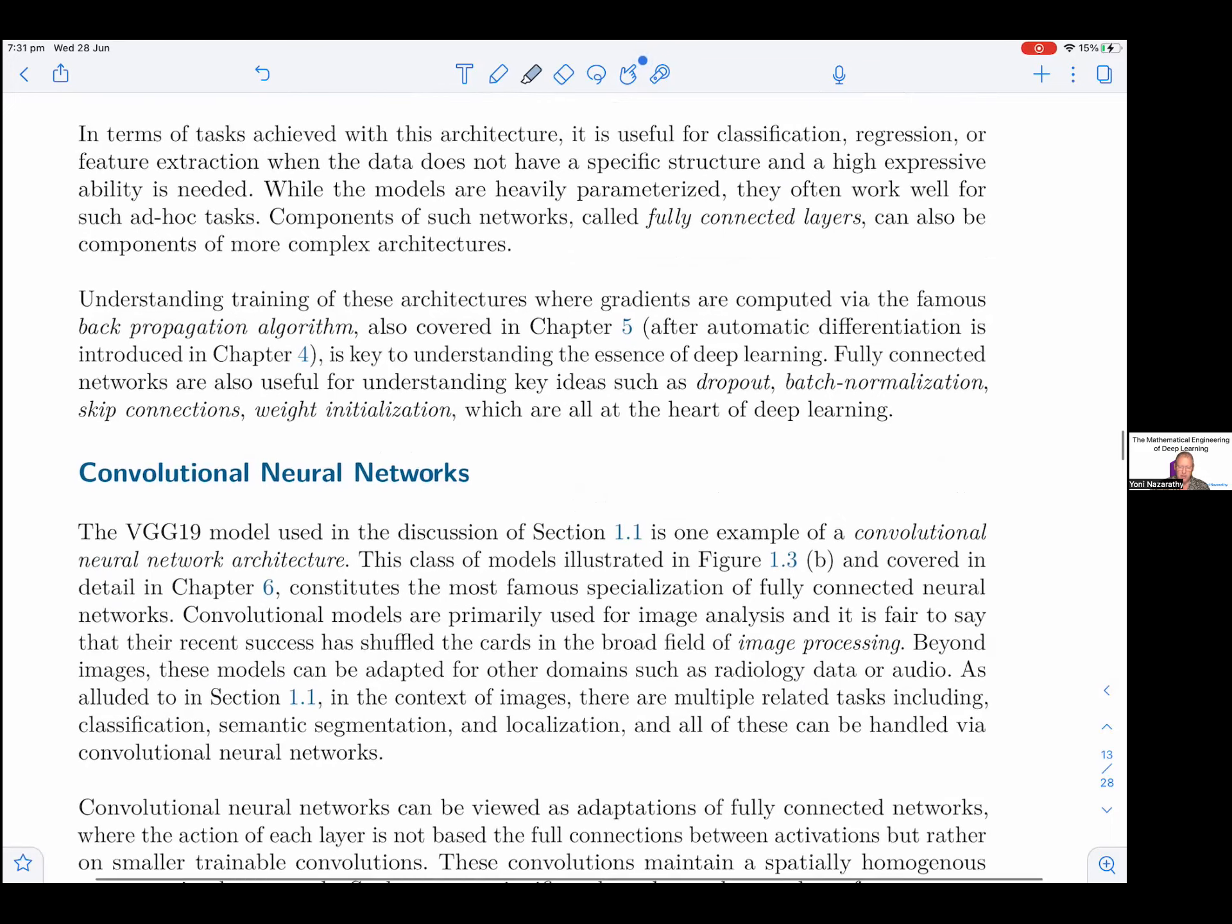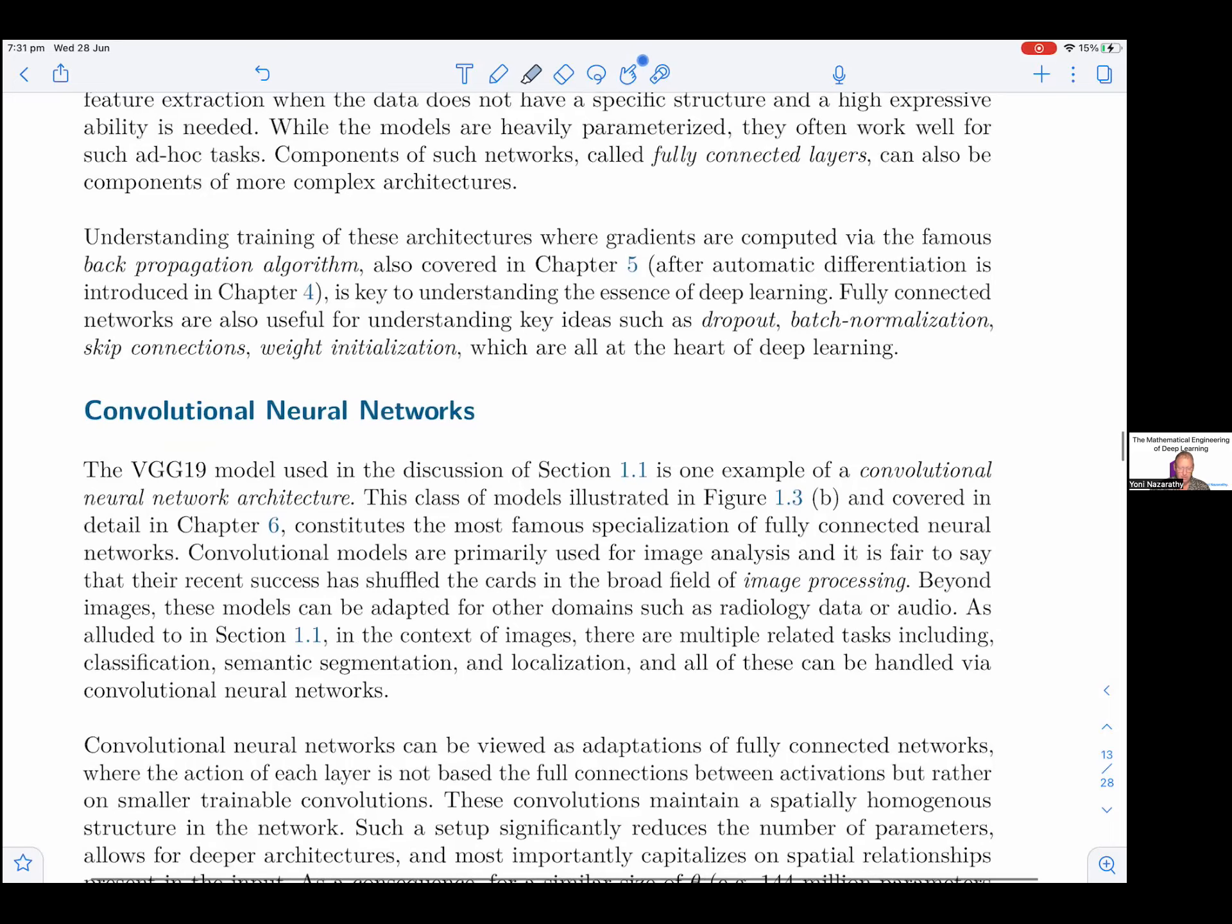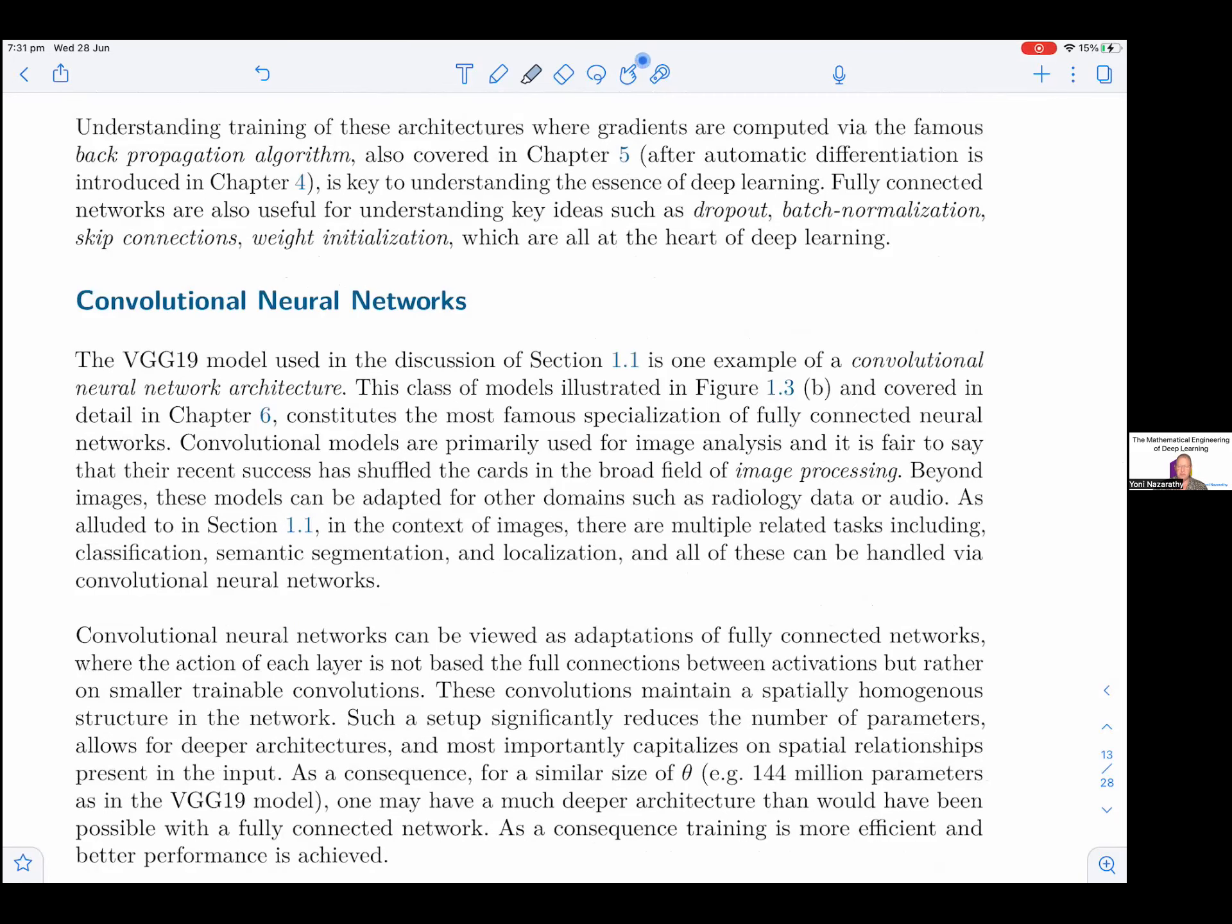Understanding training of these architectures where gradients are computed via the famous backpropagation algorithm, also covered in Chapter 5 after automatic differentiation is introduced in Chapter 4, is key to understanding of deep learning. Fully connected networks are also for understanding key ideas such as dropout, batch normalization, skip connections, weight initialization, which are all at the heart of deep learning.